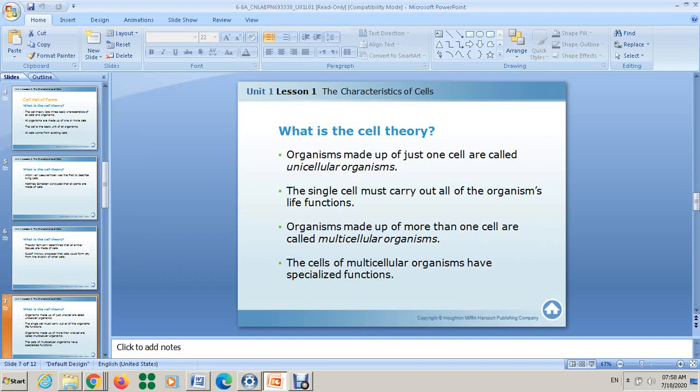Since we said organisms are made up of one or more cells, what does that mean? Let's focus on this point more. Actually, there are organisms like human beings, birds, dogs, cats, but also bacteria, yeast, amoeba. If you look at bacteria, if you look at amoeba, these organisms are made up of only one cell, and this one cell can perform all life processes. These organisms made up of just one cell are called unicellular organisms.